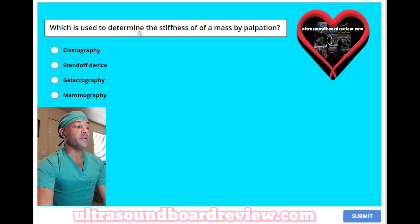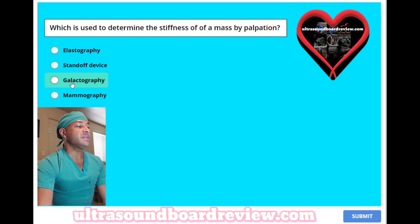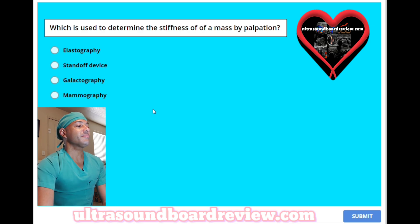Which is used to determine the stiffness of a mass by palpation? A, elastography. B, standoff device. C, galactography. Or D, mammography. The answer is A, elastography.